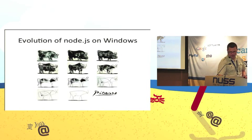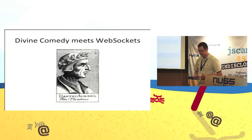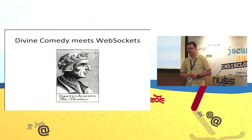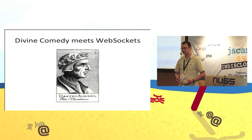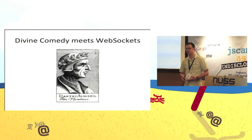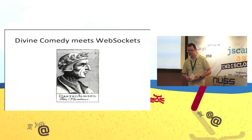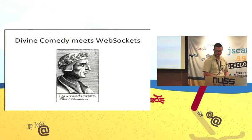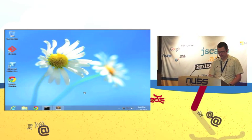With that, let's jump into a demo of Node.js on Windows. So this is Dante Alighieri — he lived in Italy in the 13th century and is famous for writing the Divine Comedy. What I'll do in this demo is take the Divine Comedy and stream it from a Node.js server over WebSockets back to the browser, one stanza every two seconds, and I'll do that on Windows 8.